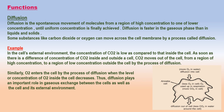Diffusion is faster in the gaseous phase than in liquids and solids. For example, a gas such as carbon dioxide gets accumulated in high concentration inside a cell, while its concentration is low in the external environment. As soon as there is a difference in concentration of carbon dioxide inside and outside of a cell, carbon dioxide moves out of the cell — from a region of high concentration to a region of low concentration — by the process of diffusion. Similarly, oxygen enters the cell by diffusion when its concentration inside the cell decreases.